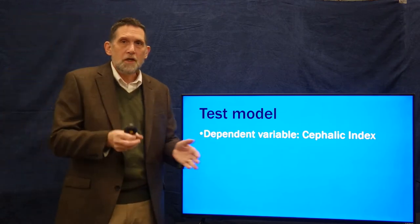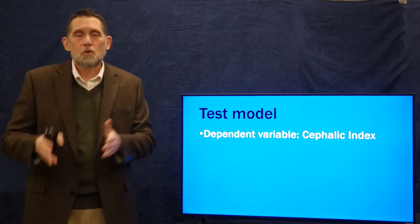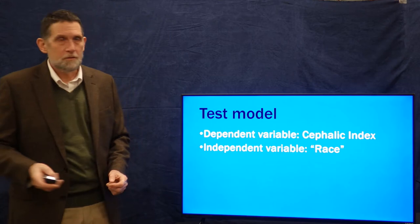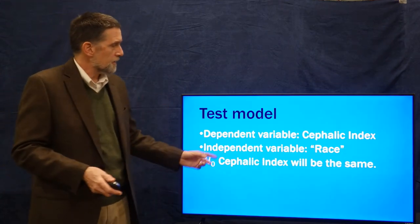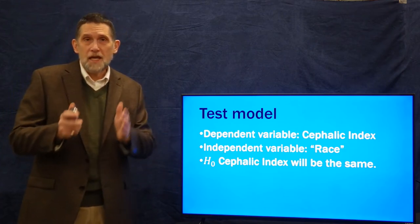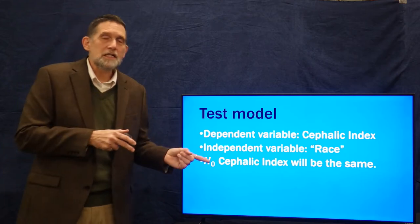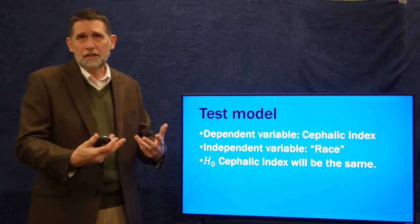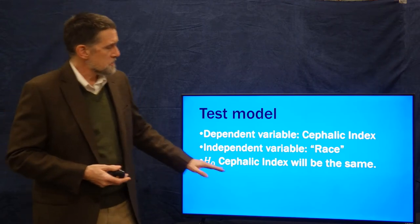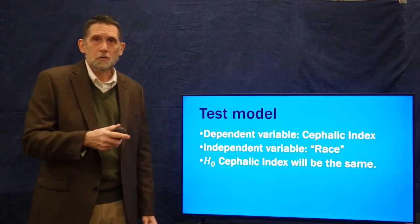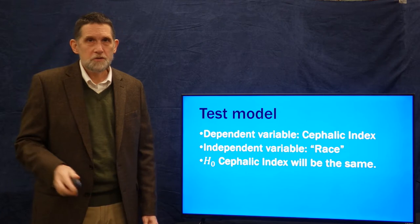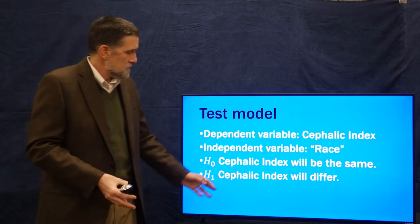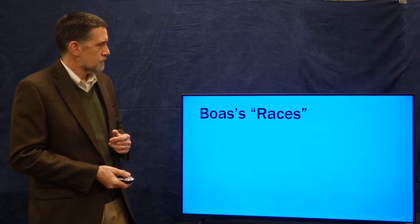The cephalic index is going to be dependent upon race, which is our independent variable. Our null hypothesis is that the cephalic index will be the same between races. This is a bit different from the T-test we looked at last time, where we compared immigrants and foreign-born to look at the effect of culture. Here we're just looking at race, so the null hypothesis is that the cephalic index will be the same between races — the opposite of the research hypothesis, which would be that it differs, as expected based on race theory.